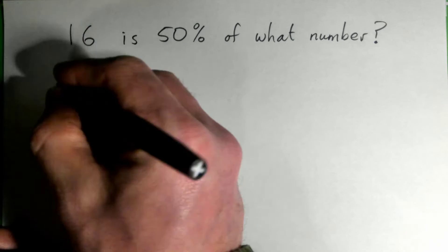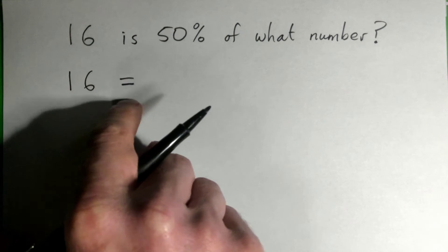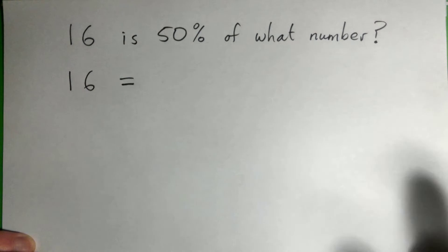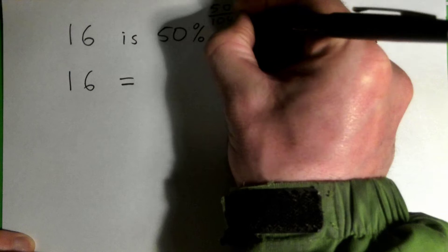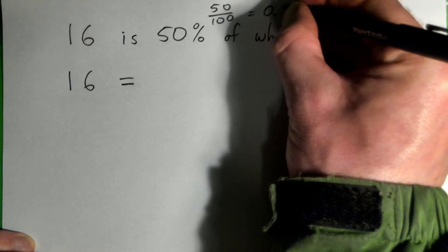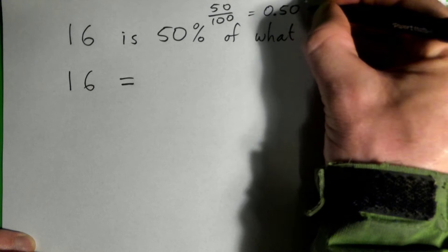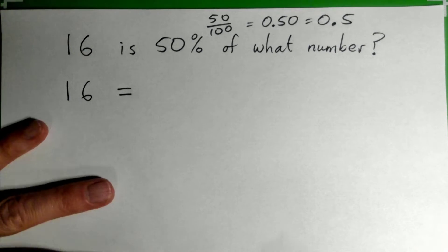is becomes equals, is becomes equals. 50% we can turn that into a decimal, that's 50 per hundred. Percent means per hundred, or as a decimal that's 0.50 or 0.5. So we can write 50% as a decimal 0.5.